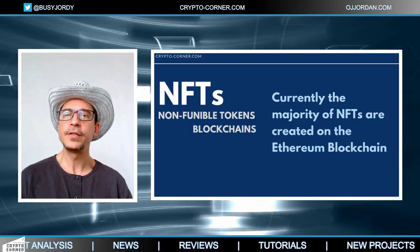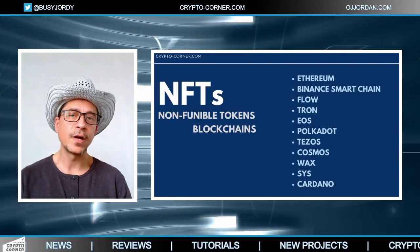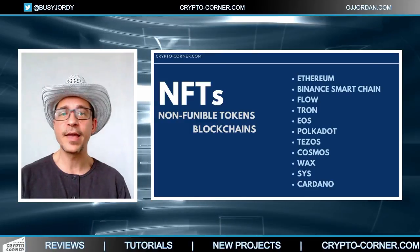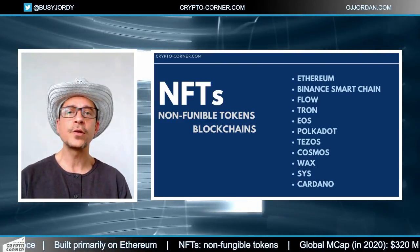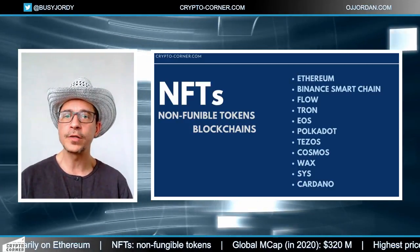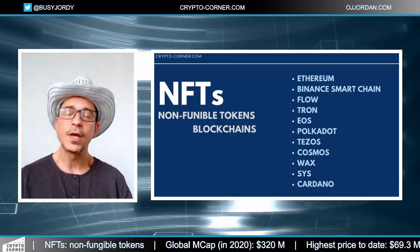Creating your work as NFT artwork — whether a GIF, image, or video — is relatively straightforward and doesn't require extensive knowledge of the crypto industry. Before you start, you will need to decide which blockchain you want to issue your NFTs on. Ethereum is currently the leading blockchain service for NFT issuance, but there is a range of other blockchains becoming increasingly popular: Binance Smart Chain, Flow by Dapper Labs, Tron, EOS, Polkadot, Tezos, Cosmos, Wax, and now Cardano. If you create NFTs on Binance Smart Chain, you will only be able to sell them on platforms that support Binance Smart Chain assets.